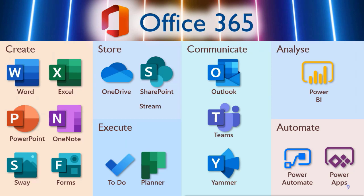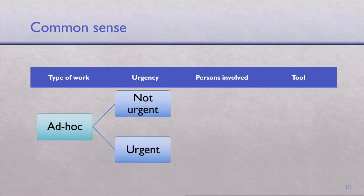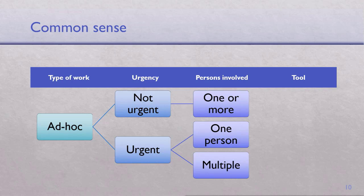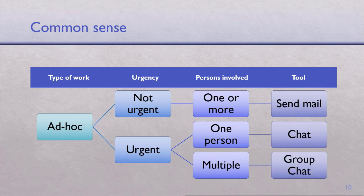With that in mind, let's look at some common-sense based decisions. For ad hoc work with no long-term commitment, I just want something from someone — I have to think, is it urgent or not urgent? Is it one person or more than one person? Nobody taught us this; we just did it by trial and error. If it's not urgent, you send a mail. If it is urgent, use chat. If urgent and multiple people, use a group chat.